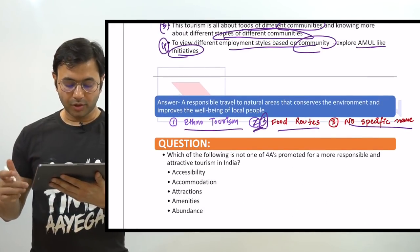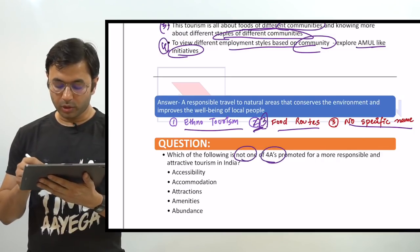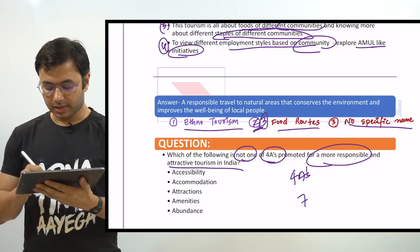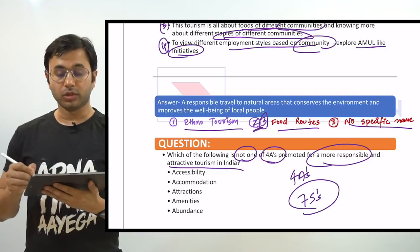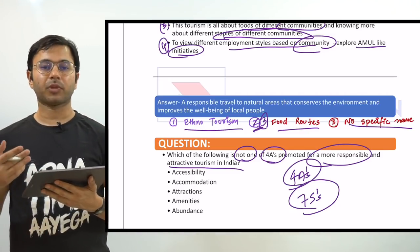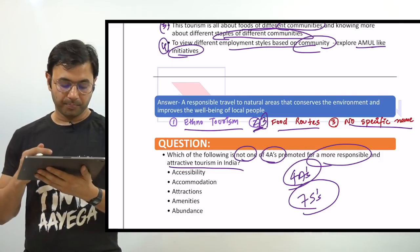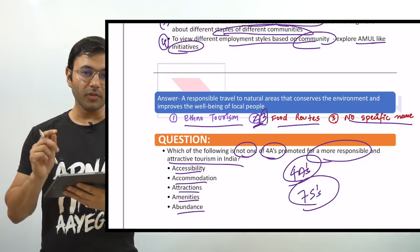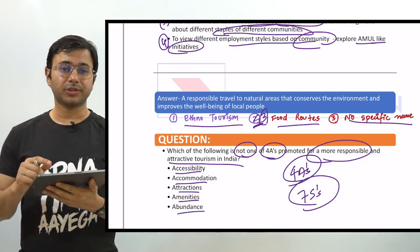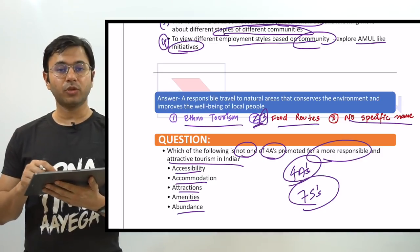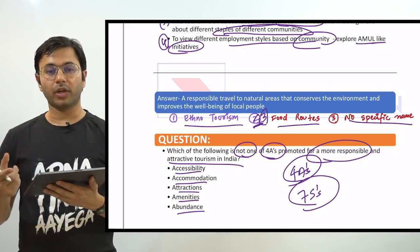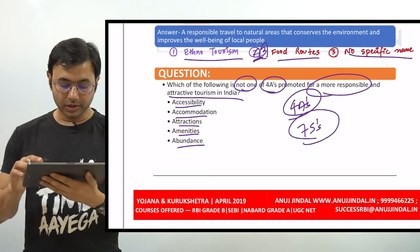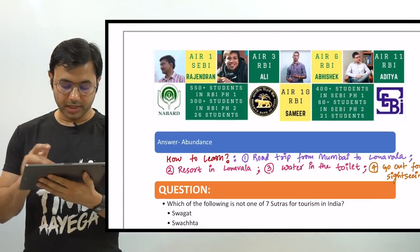Next question: which of the following is not one of the four A's promoted for more responsible and attractive tourism in India? There are four A's and seven Sutras which the government has provided to promote tourism. The options are: accessibility, accommodation, attraction, amenities, and abundance. The answer is the last option — abundance.